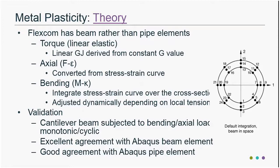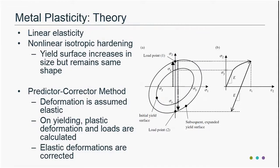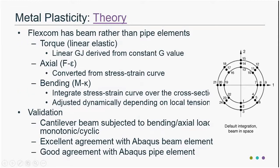For bending properties of the pipe, we integrate the stress-strain curve across the local cross-section. Depending on the value of the local effective tension in the pipe, we can re-integrate that stress-strain curve to come up with updated properties as a function of time, and you have some control over that as a user.